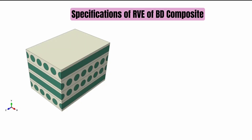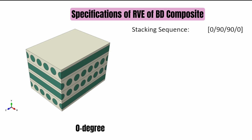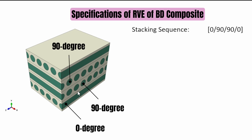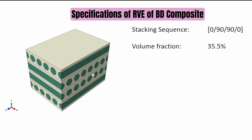As we get started, this is a typical representative volume element for a bi-directional composite at a micro-mechanical level. The stacking sequence for this design is 0/90/90/90, meaning there are four layers. The 0-degree direction is along the z-axis, and the 90-degree laminates are in the other directions. We're working with a volume fraction of 5.5% — a typical glass fiber polypropylene matrix composite.